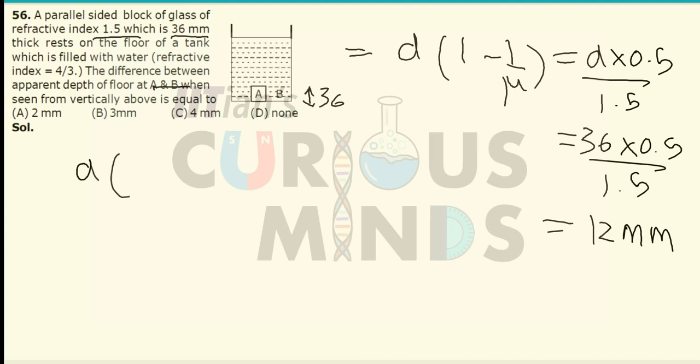Similarly, when seen from water, it will be equal to D(1 minus 1 by μ), which is equal to 36 × 4/3 × (1 minus 3/4). So basically 36 divided by 4, which is equal to 9 millimeter.